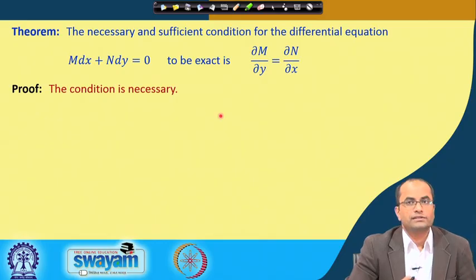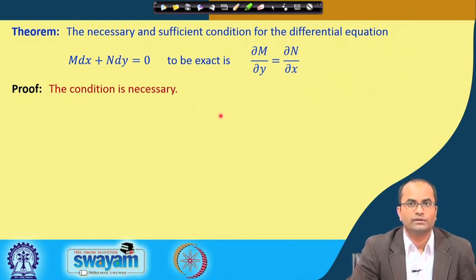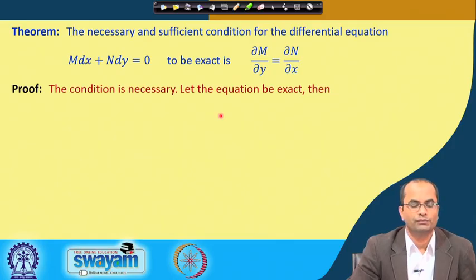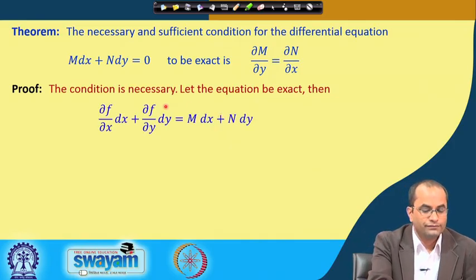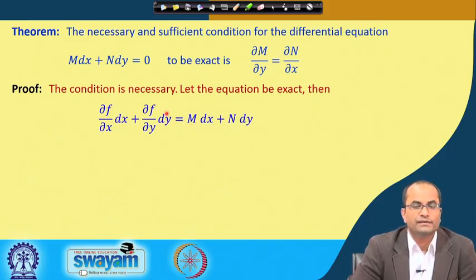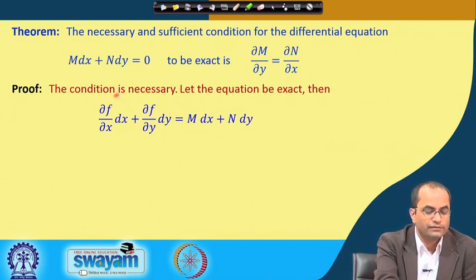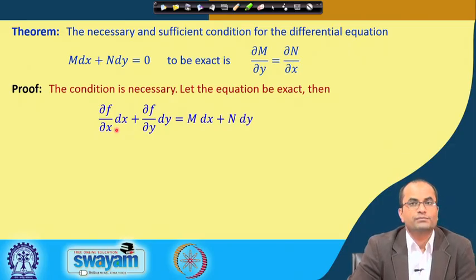First, let us prove necessity: if the given differential equation is exact, then ∂M/∂y must equal ∂N/∂x. Assume the equation is exact. Then there exists a function f of two variables whose differential is M dx + N dy. So we must have ∂f/∂x dx + ∂f/∂y dy equal to the given differential equation.